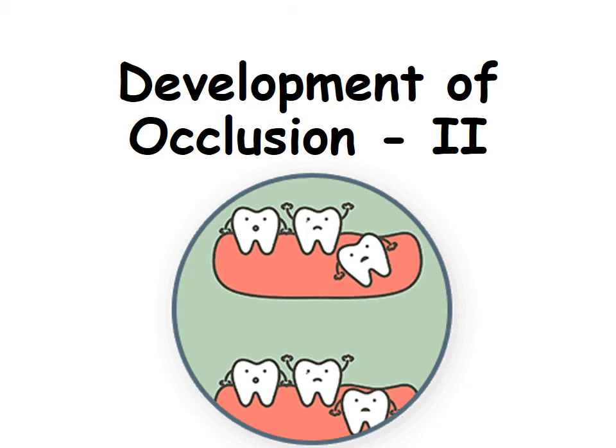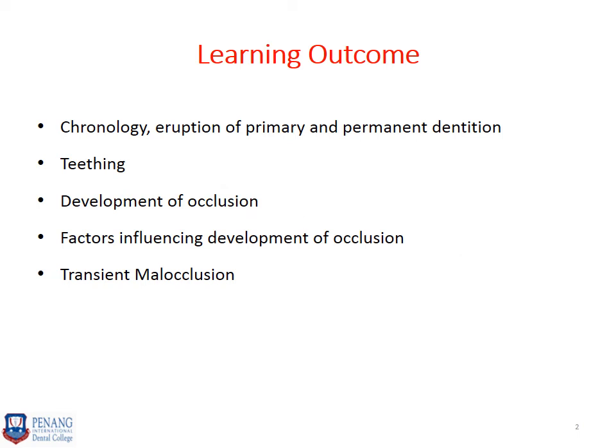Hello everyone. In the previous lecture we discussed the development of occlusion part one, which included the development of occlusion in the pre-dentate and primary dentition. In this lecture we will discuss the mixed dentition and the permanent dentition, along with self-correcting anomalies. The learning objectives include chronology of eruption of primary and permanent teeth, teething, development of occlusion, factors that influence the development of occlusion, and transient malocclusions.